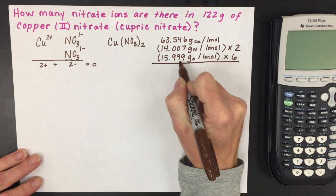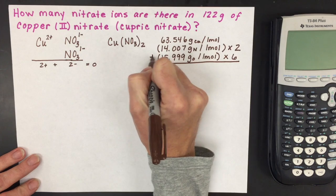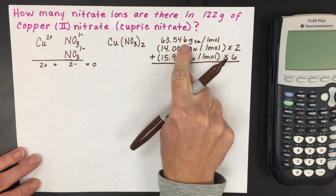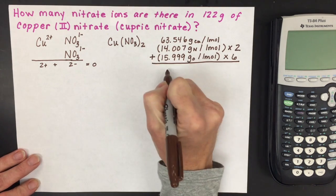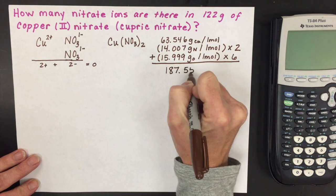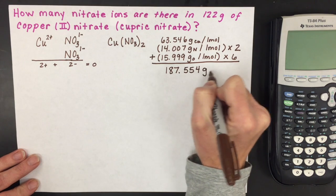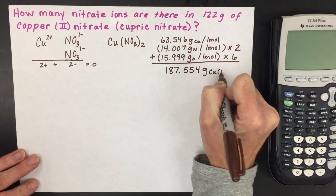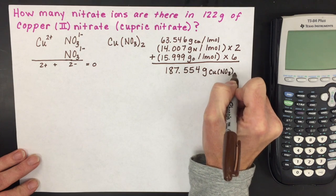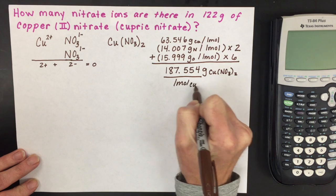When you multiply 15.999 times 6, plus 2 times 14.007, plus 63.546, you get a molar mass of 187.554 grams per mole for copper (II) nitrate.